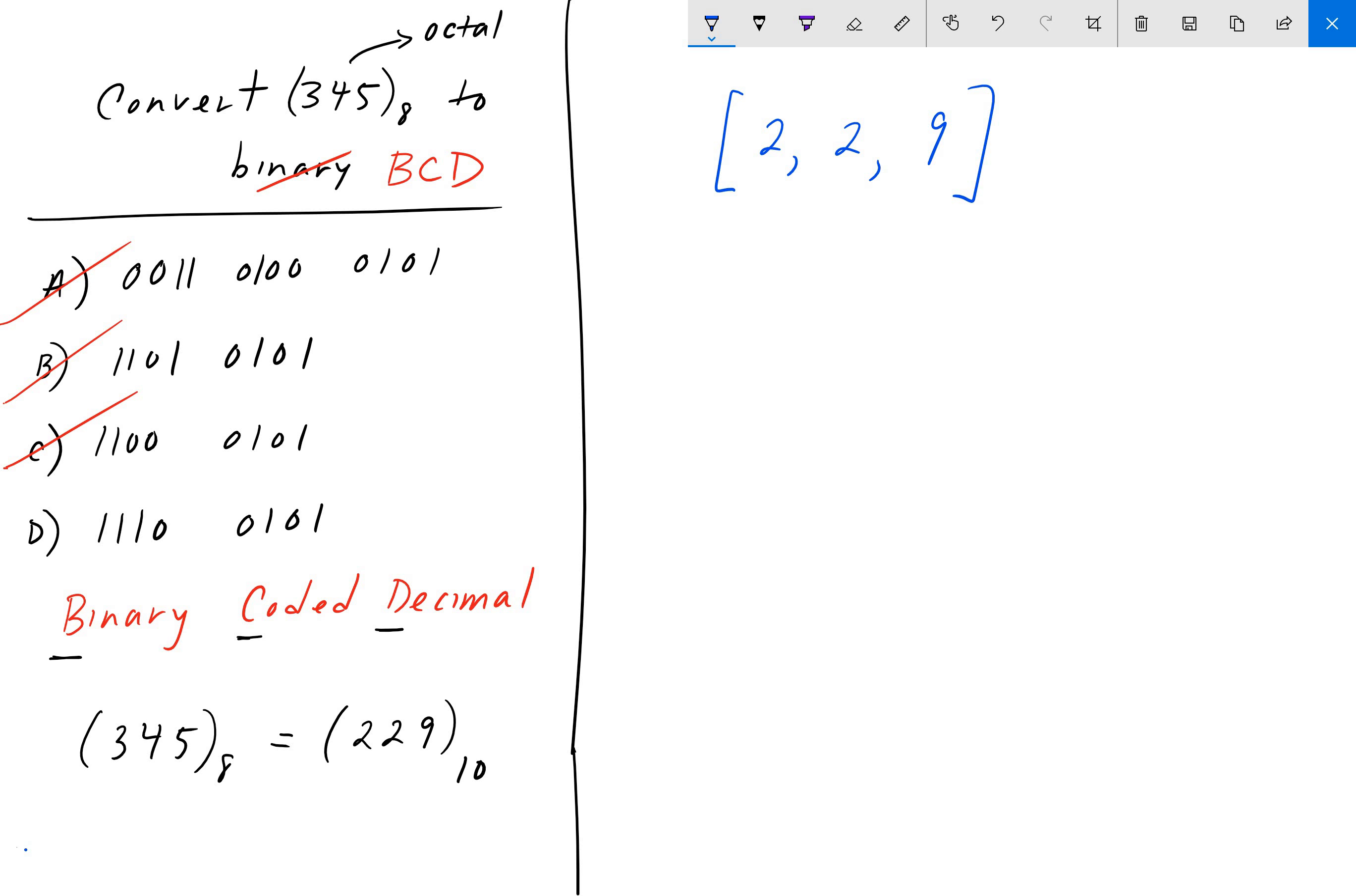In this case, 2 in binary is 0010, and same for the second digit, 0010.